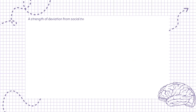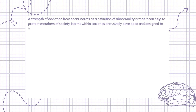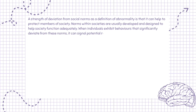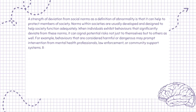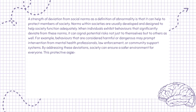A strength of deviation from social norms as a definition of abnormality is that it can help to protect members of society. Norms within societies are usually developed and designed to help society function adequately. When individuals exhibit behaviors that significantly deviate from these norms, it can signal potential risks not just to themselves but to others as well. Behaviors that are considered harmful or dangerous may prompt intervention from mental health professionals, law enforcement, or community support systems, ensuring a safer environment for everyone.